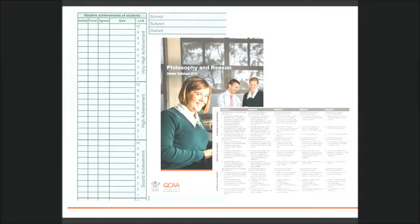In order for schools to make relative achievement decisions, they take into account all available evidence in a student folio and match it to the syllabus standards for each dimension. Relative achievement decisions are made by looking at the extent to which the standards have been achieved across the dimensions of the syllabus, at, for example, a threshold, low, typical or better than typical standard.